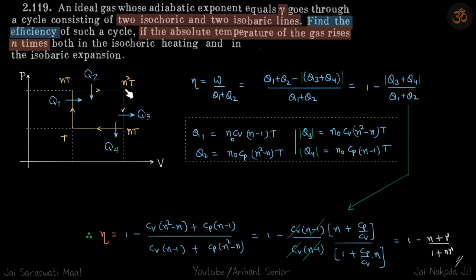Then in isobaric expansion, temperature again increases n times. The temperature was nt, so it becomes n²t here. Now, what will be the temperature at the fourth point? Let's label the pressures as p1 and p2.